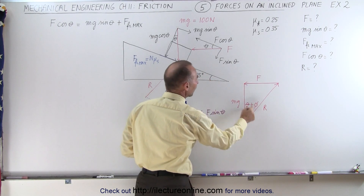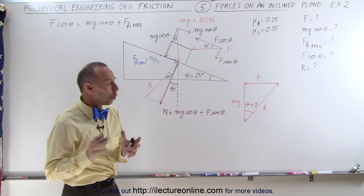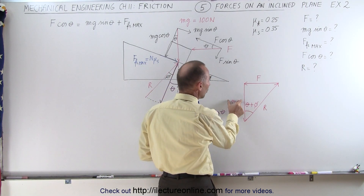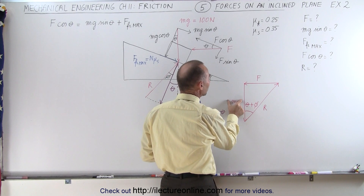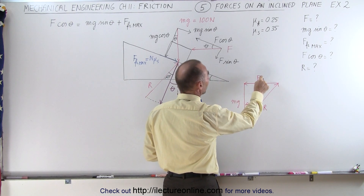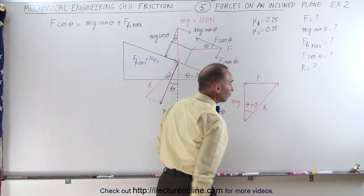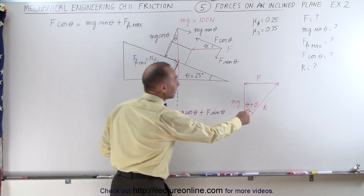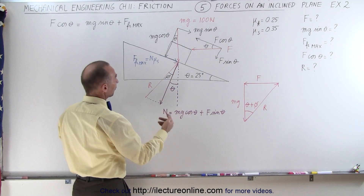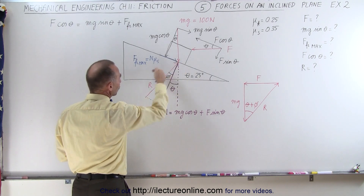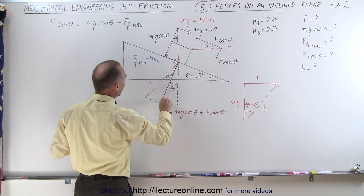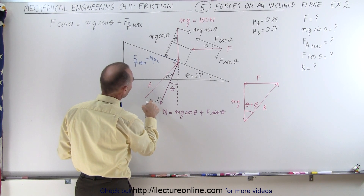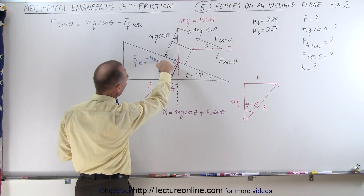Only theta is known; phi is not. If I also know phi, so that I know the total angle here, and knowing the weight of the object, I can very easily calculate the applied force and the reaction force. The path to success is to find phi, and to find that we're going to look at this right triangle. Notice that this is a right triangle and that this side is equal to the friction force.